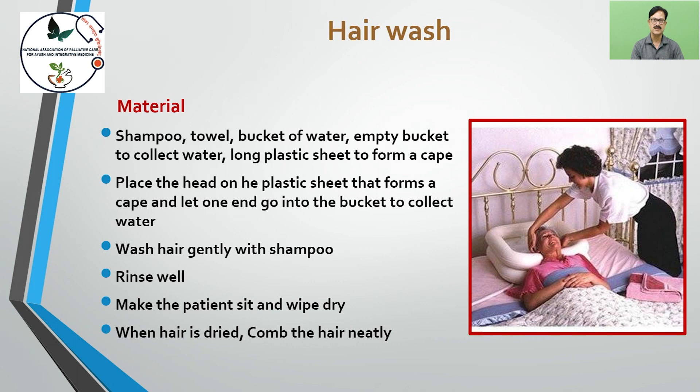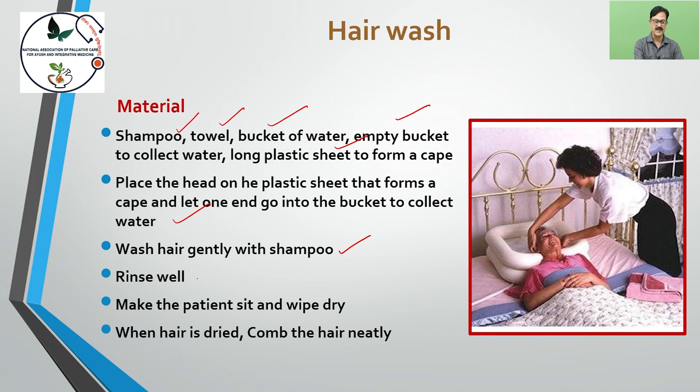For hair wash, the materials required are shampoo, towel, a bucket of water, an empty bucket to collect water, and a long plastic sheet to form a cape. Place the head on the plastic sheet forming a cape and let one end go into the bucket to collect the water. Wash hair gently with shampoo, rinse well. Make the patient sit and wipe dry. When the hair is dried, comb the hair neatly.